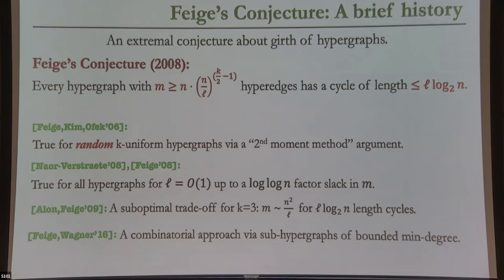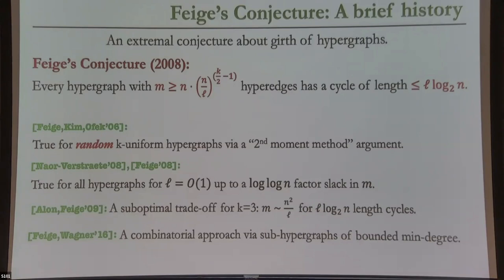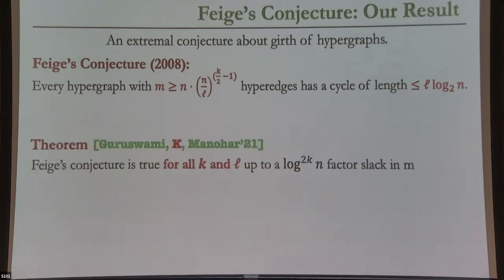A paper by Asaf and Verstraete basically shows one end of the trade-off: the L = O(1) regime, where there's a log-length cycle. Following that, there were some suboptimal but non-trivial trade-offs by Alon and Uri Feige. A few years ago there was a nice combinatorial approach to attack this conjecture, with bounds for some relaxations of the even cover problem but not for the cycle problem itself. That's the abridged history of this conjecture.